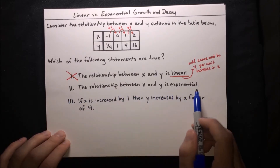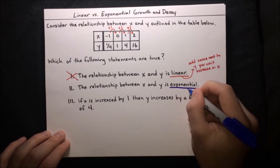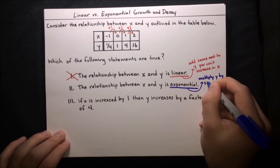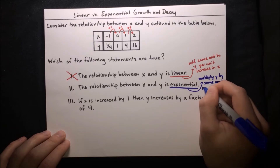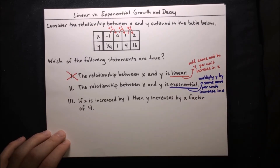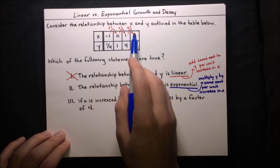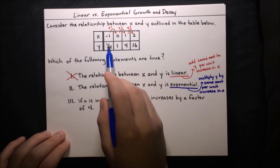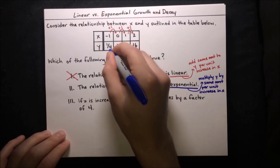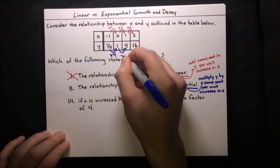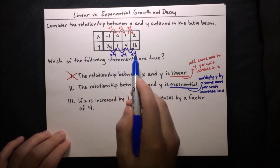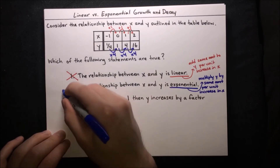Statement 2: the relationship between x and y is exponential. Exponential means that we multiply y by the same amount per unit increase in x. One-fourth times 4 makes 1; 1 times 4 makes 4; 4 times 4 equals 16. We're multiplying by 4 every time. So yes, the relationship is exponential — we multiply y by 4 every time we increase x by one unit. Statement 2 is true.